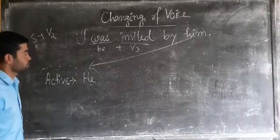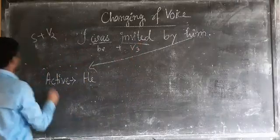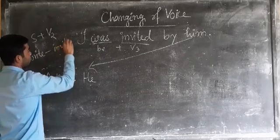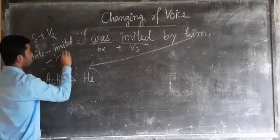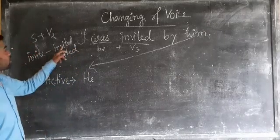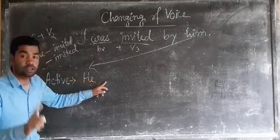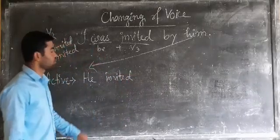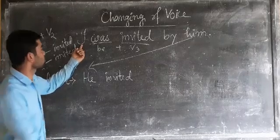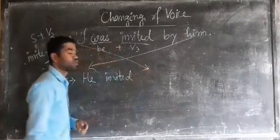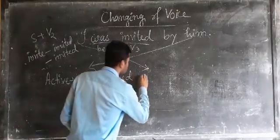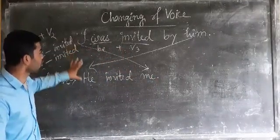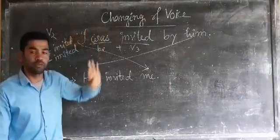In past indefinite tense, we use the second form of the verb. 'Invite' is the main verb. The second form is 'invited.' So: 'He invited.' 'I' was the subject of the passive sentence; here it becomes the object, converted to 'me.' So the active form is: 'He invited me.' And the passive form of 'He invited me' is 'I was invited by him.'